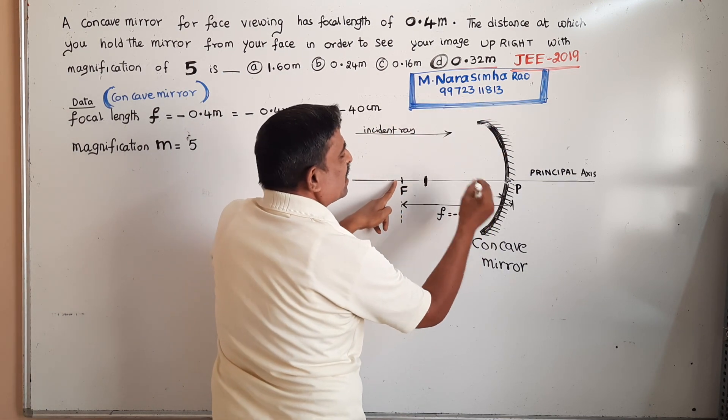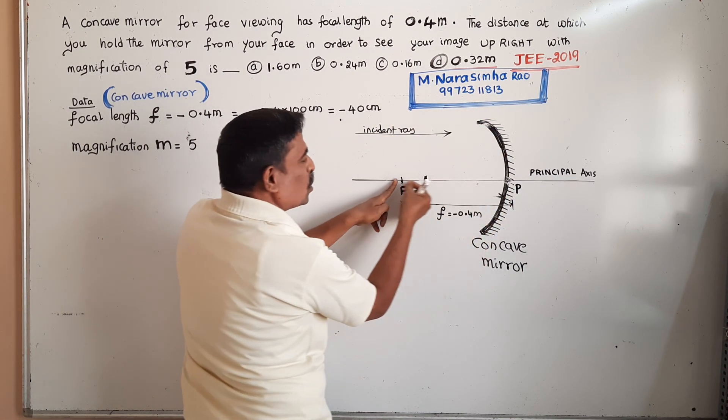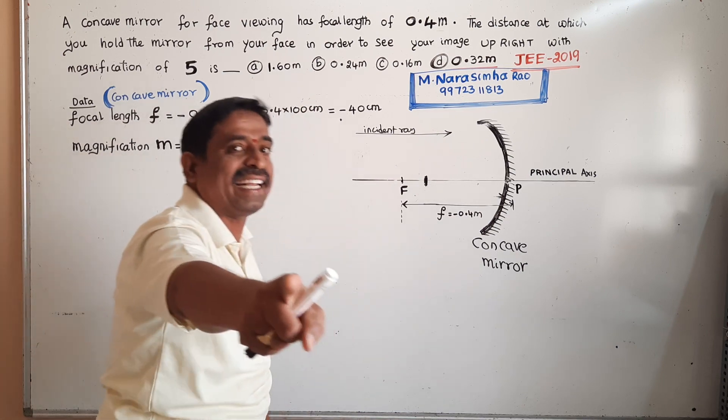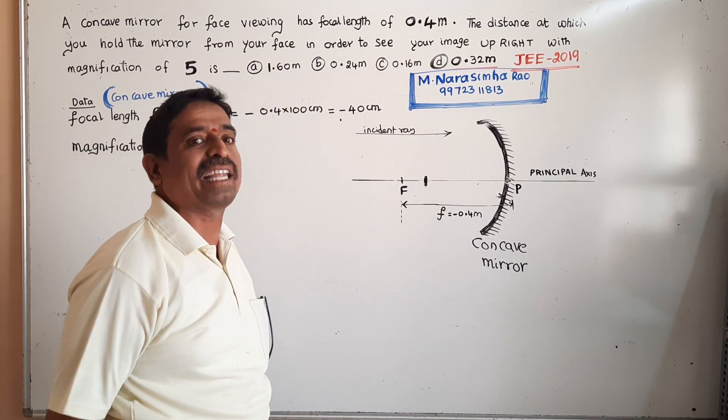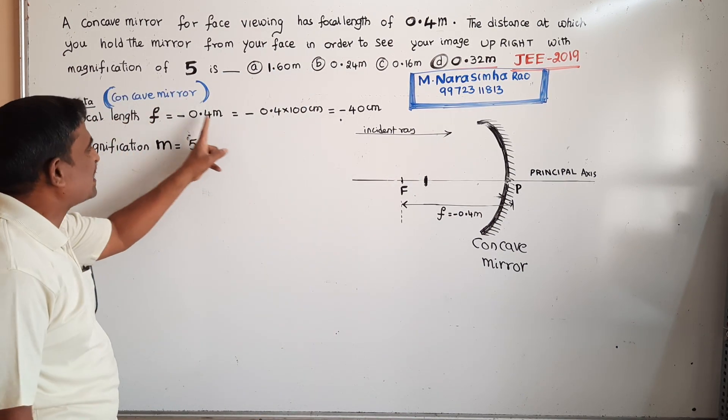We are measuring the distance from right to left. For that reason, in the case of a concave mirror, the focal length is negative.